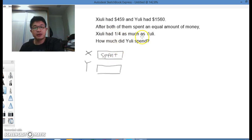Now, after this amount is spent, this is the amount of money spent. After this was spent, Xuli had one quarter as much as Yuli. This would mean that Xuli would have one unit while Yuli would have four. So Xuli has one. Yuli would have four. One, two, three, four. So again, this is the amount spent. This is the amount left.